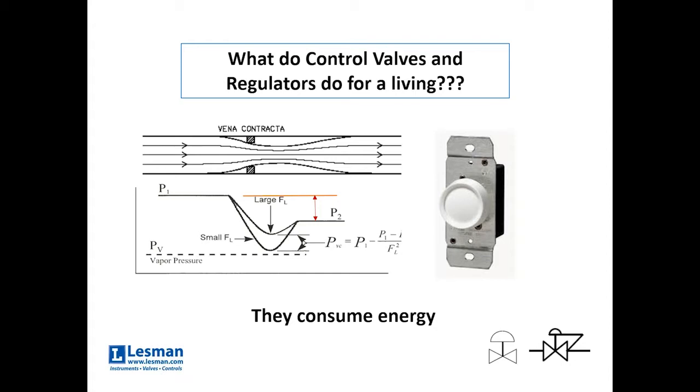What do control valves and regulators do for a living? They consume energy. And for those of you that can see the visual, I have the classic vena contracta shown where the energy in the pipe, the fluid is moving along. There's a restriction. In this case, it's a variable restriction because it's a control valve or a regulator that moves. But once it hits the restriction, it has to move faster.